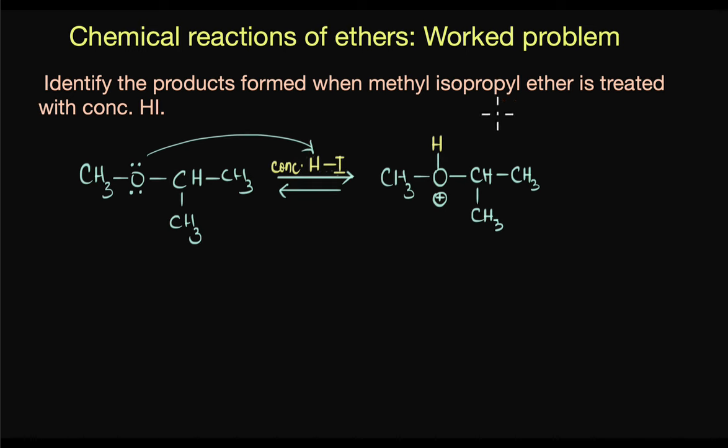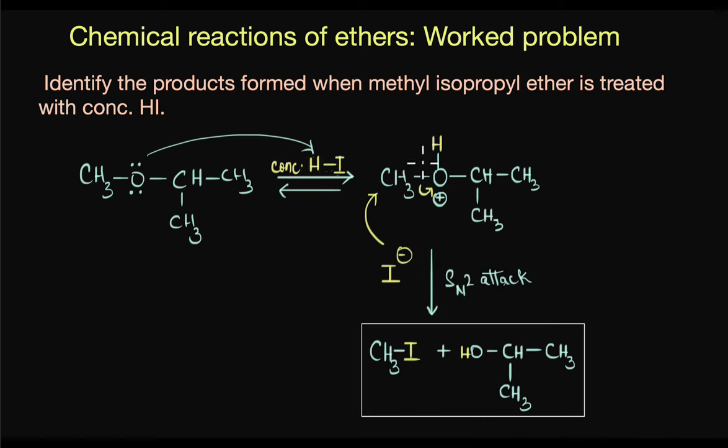Now the question is we have an I- here. Now which carbon would it attack? Would it attack the methyl group or would it attack the isopropyl group? We already know that SN2 mechanism is highly driven by steric factor. So the I- would attack that part of the ether which is least hindered. So obviously the nucleophile would attack the less hindered methyl group and eliminate this as the alcohol.